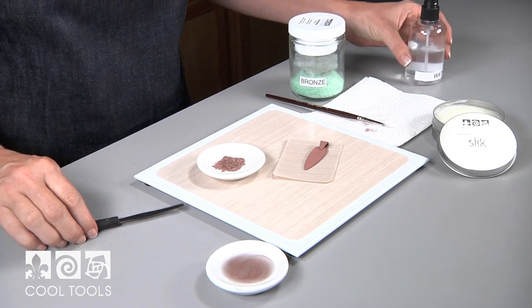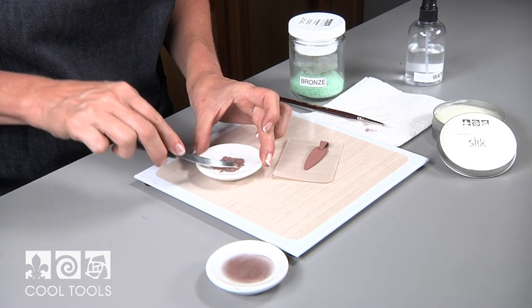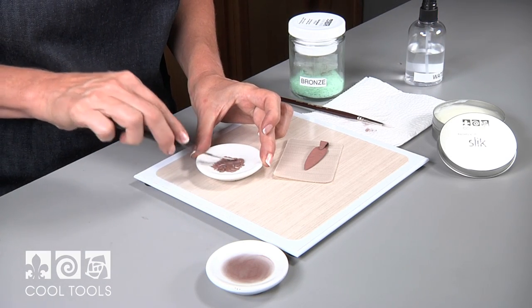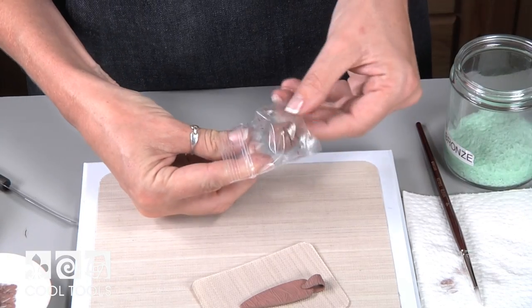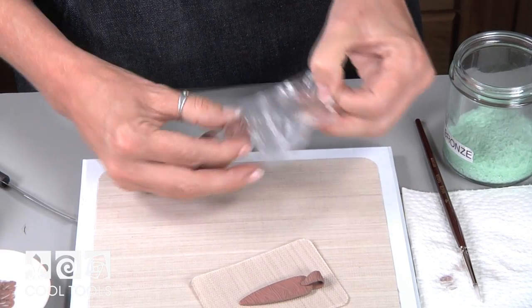Slip dries out quickly and can be easily rehydrated with a quick spritz of your water mixture and stir. For added decoration, I'm adding a small round ball to the bale.